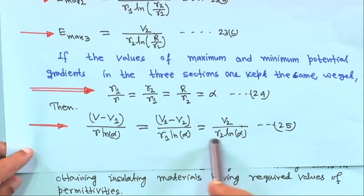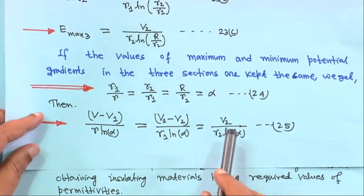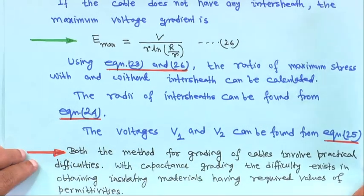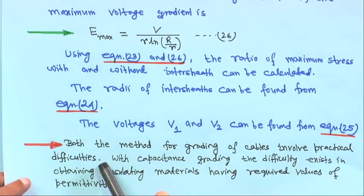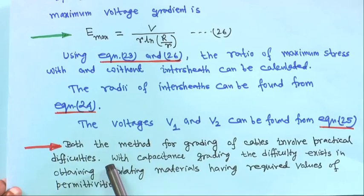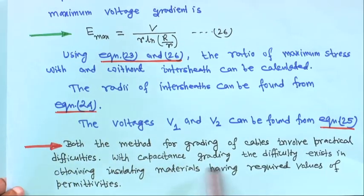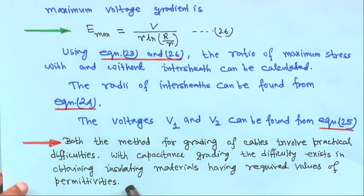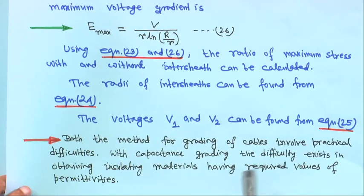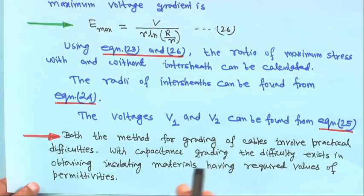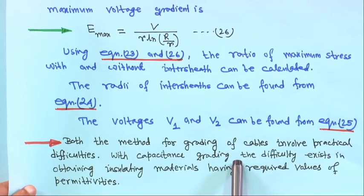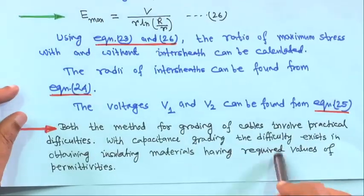Both methods for grading of cables involve practical difficulties. With capacitance grading, the difficulty lies in obtaining insulating materials with the required values of permittivity. For example, rubber has permittivity 4–6 and impregnated paper 3–4 have been suggested, but rubber is very expensive and the cost becomes prohibitive.